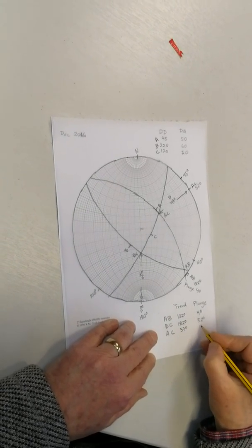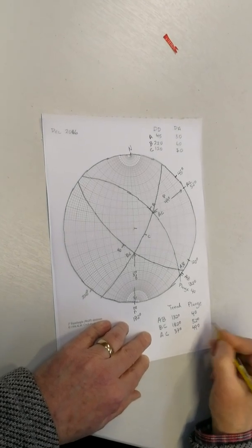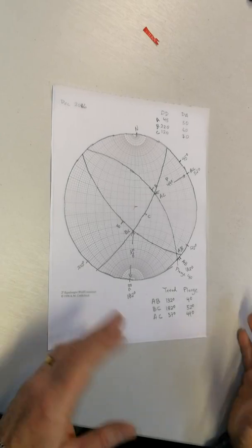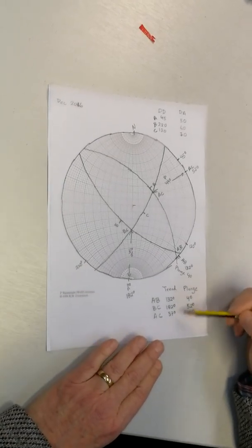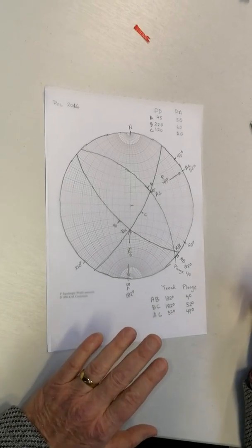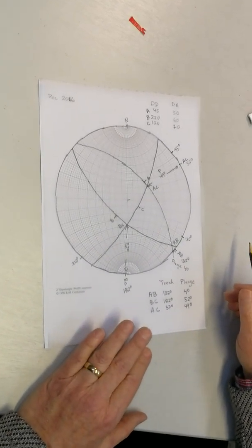Now there will be some model answers out there. They might well differ by a couple of degrees, which is quite acceptable because this is a hand technique. But that's how you draw a stereo net.